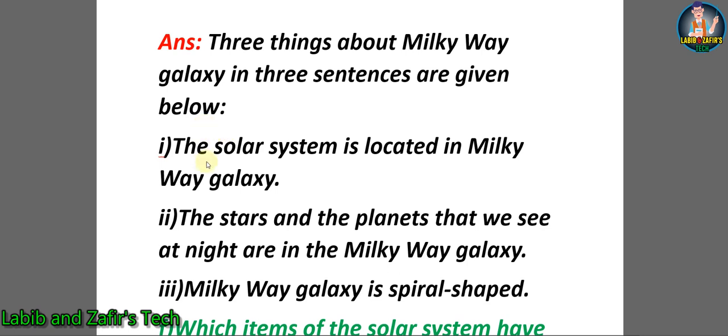Number 1: The Solar System is located in Milky Way Galaxy. Number 2: The stars and the planets that we see at night are in the Milky Way Galaxy. Number 3: Milky Way Galaxy is spiral shaped.